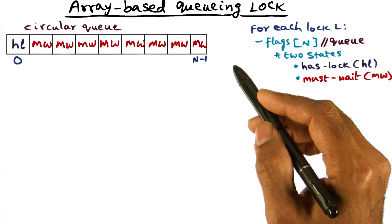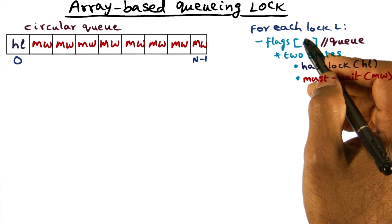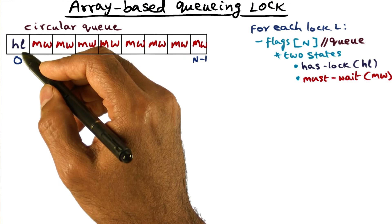So what we do when we get this lock is to initialize the flags array data structure, which represents a circular queue, by marking one slot as HL and all the others as must-wait.